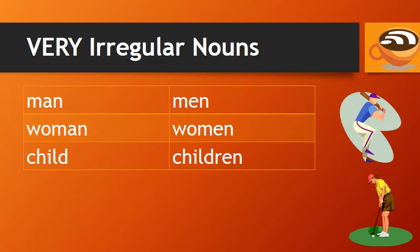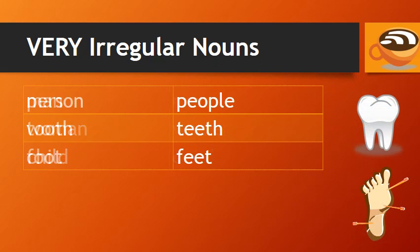Finally, we have the very irregular nouns. For example: man, men; woman, women; child, children; person, people; tooth, teeth; foot, feet.